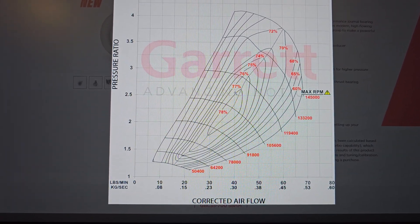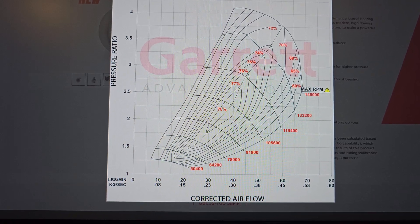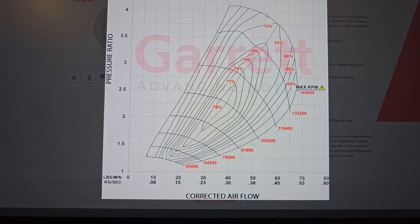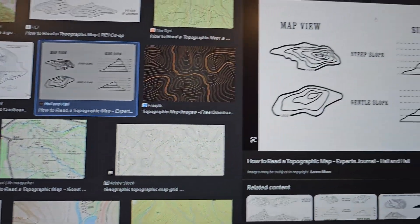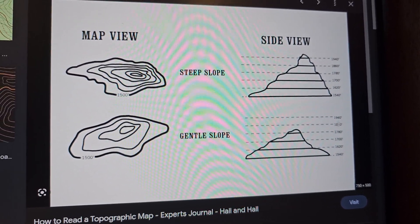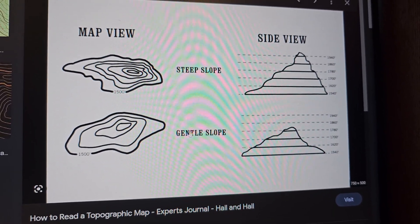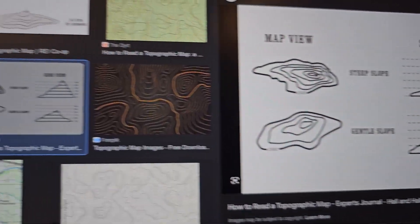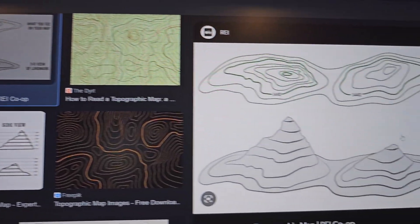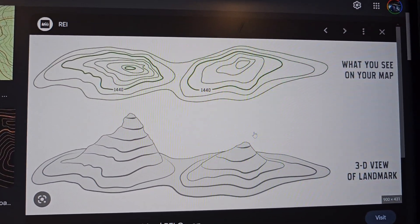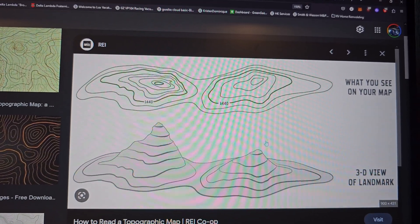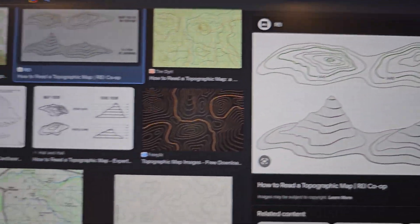But hopefully this gives you guys an idea of how to read these maps. Again, closer together is a steeper slope. Further apart is a softer slope, just like we're seeing right here. Fantastic topographic explanation. And again, these are used for everything. We're getting what you're seeing on the map, and a three-dimensional version of that below. So I hope that helps a lot of you guys out.